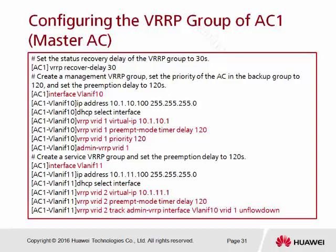We can also use the preempt time delay — we can put a number here, for example 120 seconds. It is good to enable this preempt mode to prevent unwanted failover happening to our AC. We can also set the priority for this interface. By default, all VRP priority is 100. For VRP, the highest value becomes the most preferred.